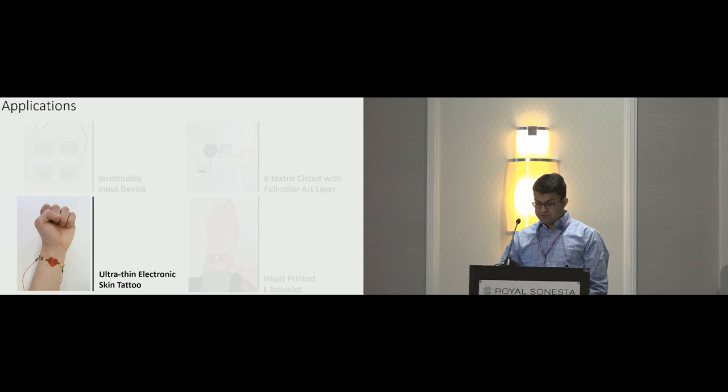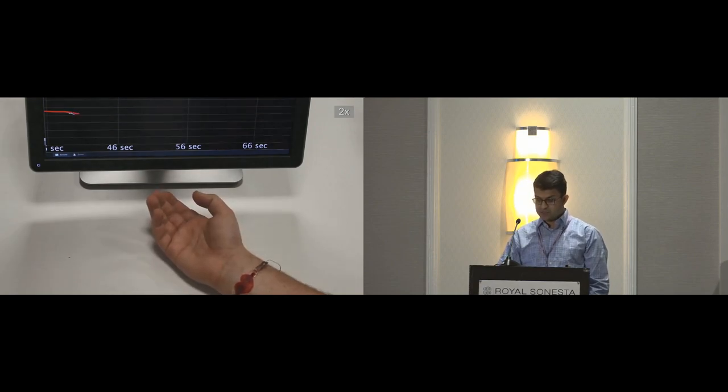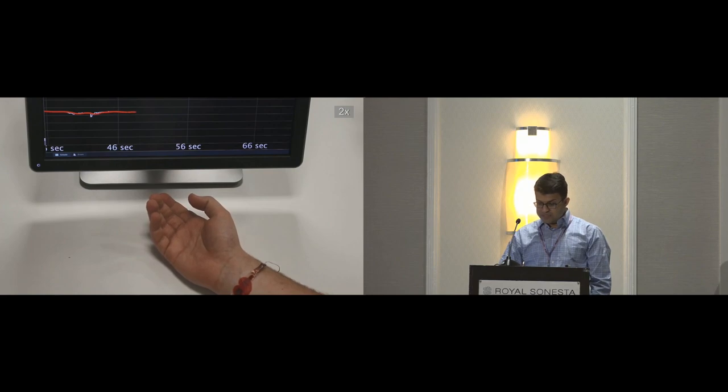With our third example, we demonstrate rapid fabrication of interfaces even closer to the body. We present the first electronic skin tattoo fabricated using a simple desktop inkjet printer. Our approach allows us to rapidly fabricate these ultra-thin devices while prior work relied on time-consuming processes like screen printing. In this example, we realize skin-mounted interfaces for continuous measurement of electrodermal activity. To this end, we leverage our multi-material printing capabilities to create skin-exposed electrodes. We first print two electrodes with connecting traces onto tattoo paper and then print an additional layer of PVP to isolate traces while leaving the electrodes exposed.